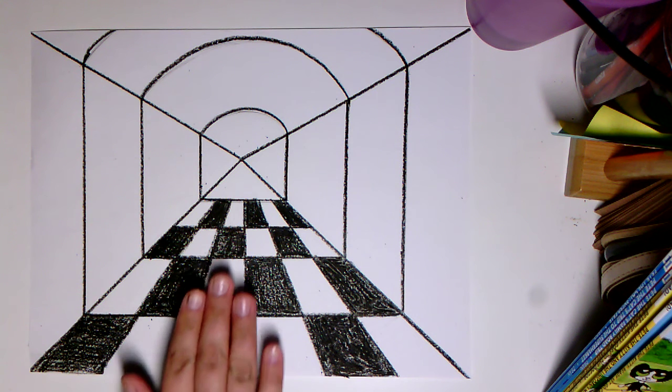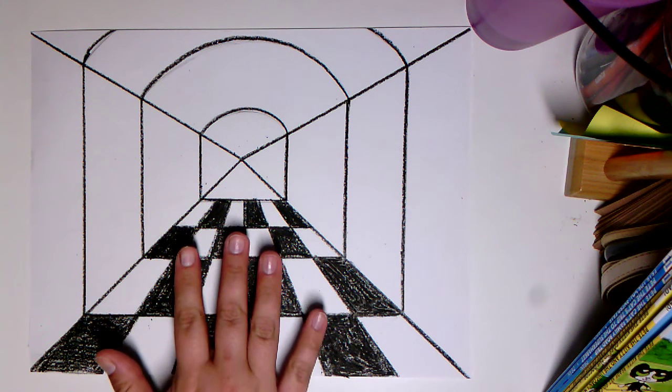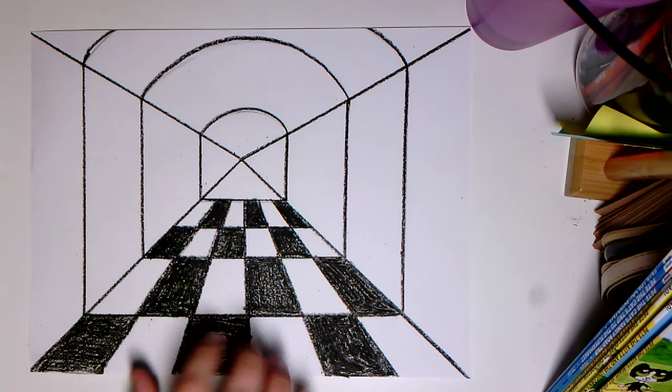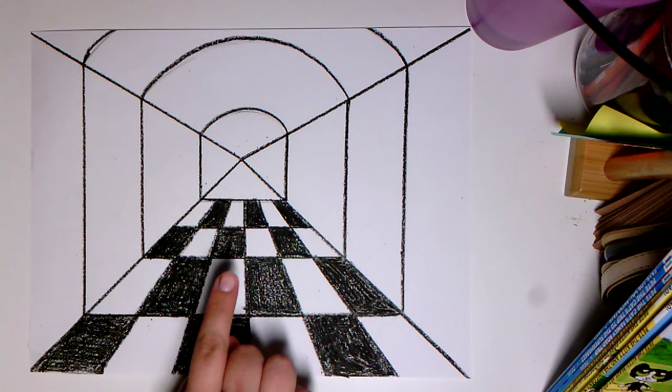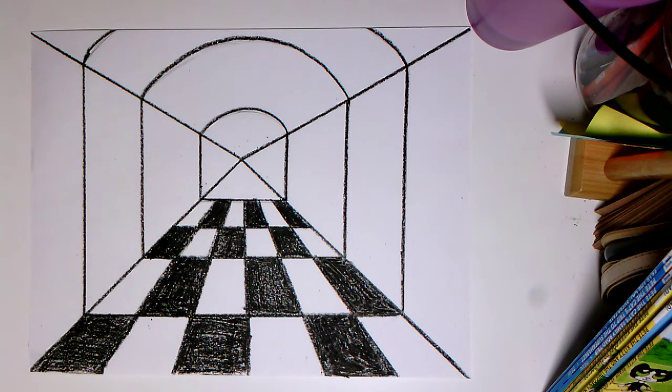Now since this is a floor and we just finished that and our perspective, our one point perspective makes it look like it's going off into space. So it looks like we're standing right here and we're looking straight ahead down this kind of hallway into the aquarium.